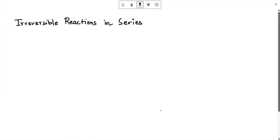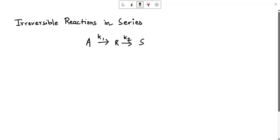In this video we are going to talk about irreversible reactions in series. This again involves multiple elementary reactions, but now they are in series. Let us consider the simplest case: the following reactions in series — A gives R gives S — and their rate constants are k1 and k2 respectively.